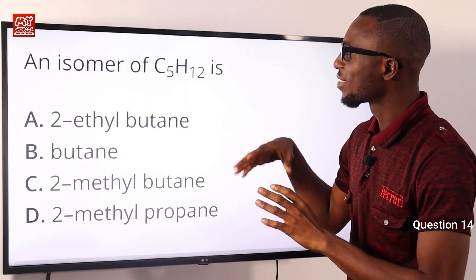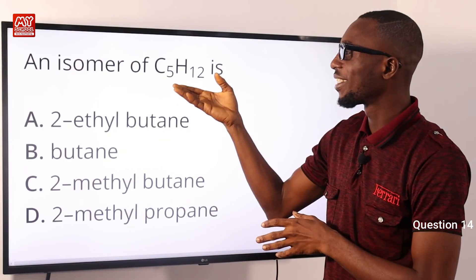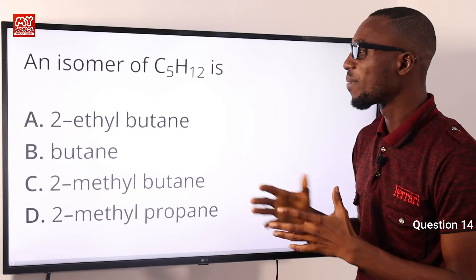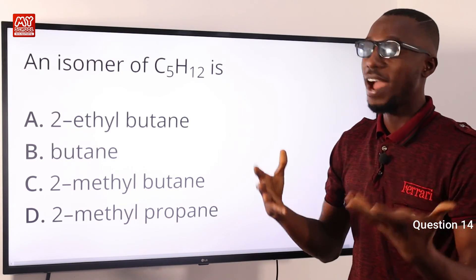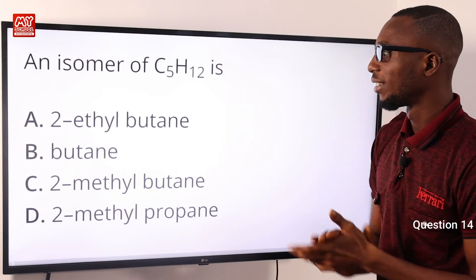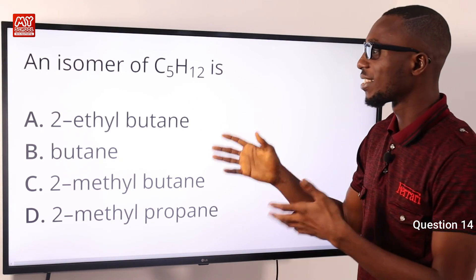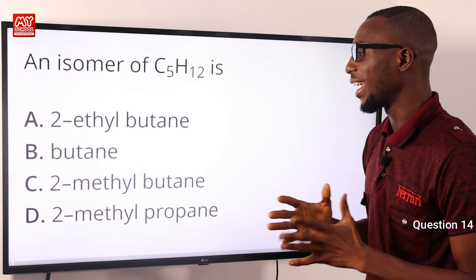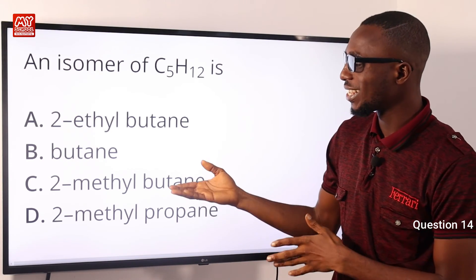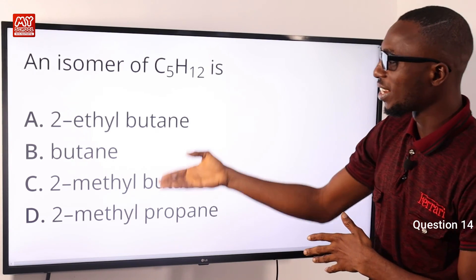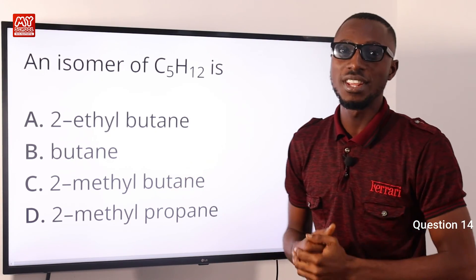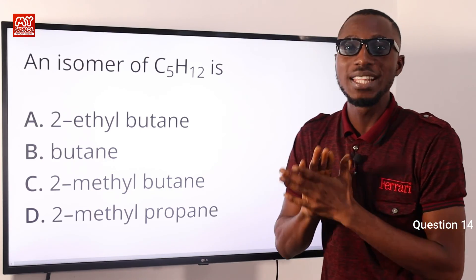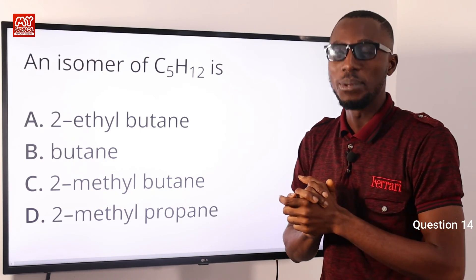Question fourteen: an isomer of C5H12 is what? C5H12 is pentane — a straight chain. Its isomer would be a branched-chain five-carbon compound, which is 2-methylbutane. Option C is correct for 2-methylbutane: it shares the same molecular formula as pentane but has a branched rather than straight chain.